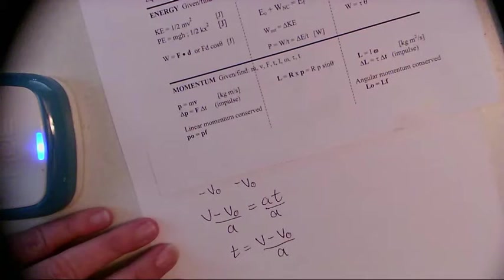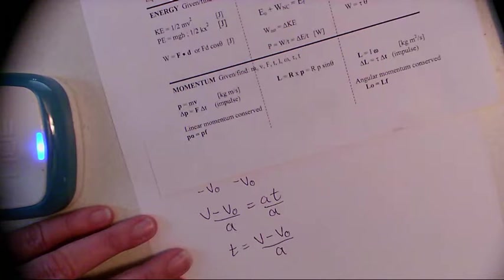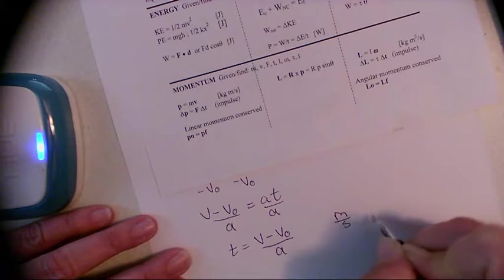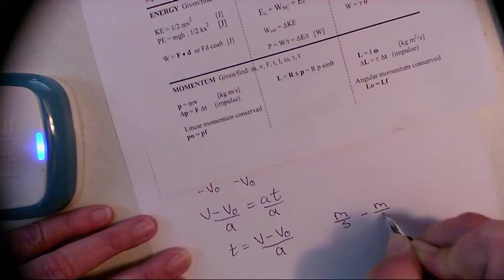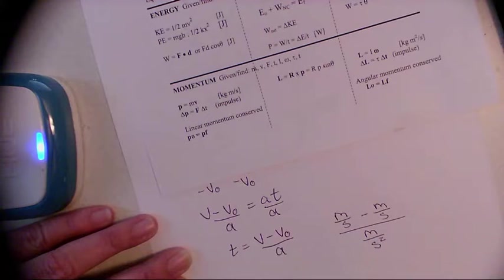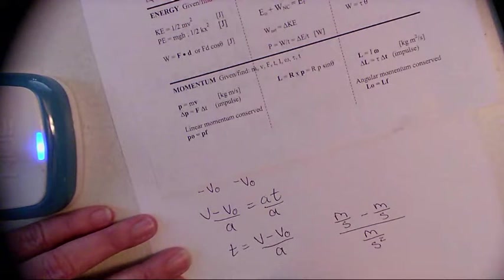Hey, let's do some dimensional analysis. Why don't we? You think this works? We need to get it to equal time. So I have meters per second minus meters per second divided by meters per second squared. Remember fractions on the bottom so it flips, becomes the inverse.